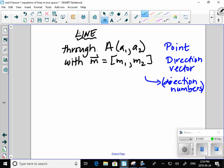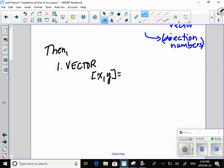Then, there are three forms. First one. Vector equation of a line. Vector xy is vector from 00 to a1, a2. Plus a scalar multiple of my direction numbers. Different language for the same thing.